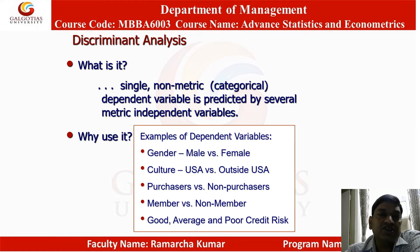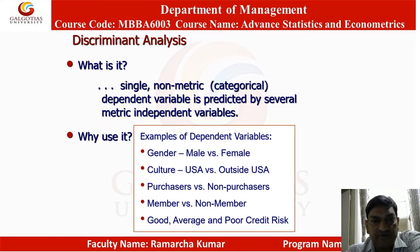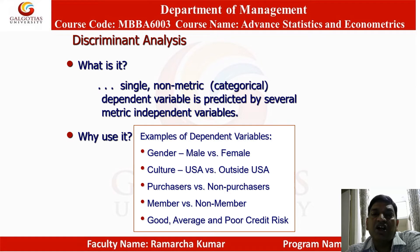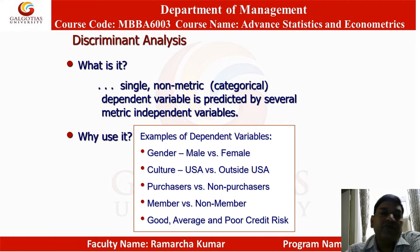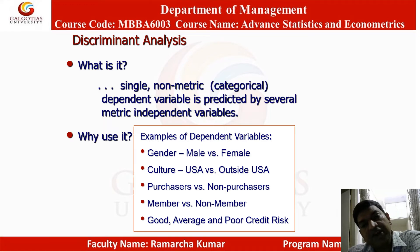Discriminant analysis is used when a single non-metric categorical dependent variable is predicted by several metric independent variables. We use it when dependent variables take categorical values such as gender (male/female), cultural group (USA or outside USA), purchaser versus non-purchaser, member versus non-member, or good, average, and poor credit risk.